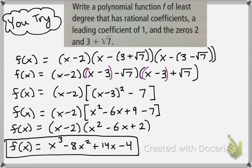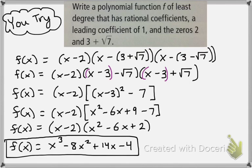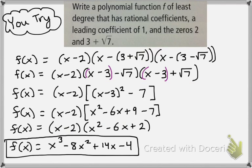So since I have zeros of 2 and 3 plus root 7, I know that I also have a zero of 3 minus root 7. You can see that I created my factors by subtracting all of my zeros, I distributed out the negatives, and then I grouped my x minus 3 terms to help when multiplying the back two expressions. From there I multiplied out my binomials, simplified, and had my binomial times my trinomial. This is really good practice of your computation skills and your ability to execute these difficult types of problems. The main takeaway here should be turning your zeros into factors.